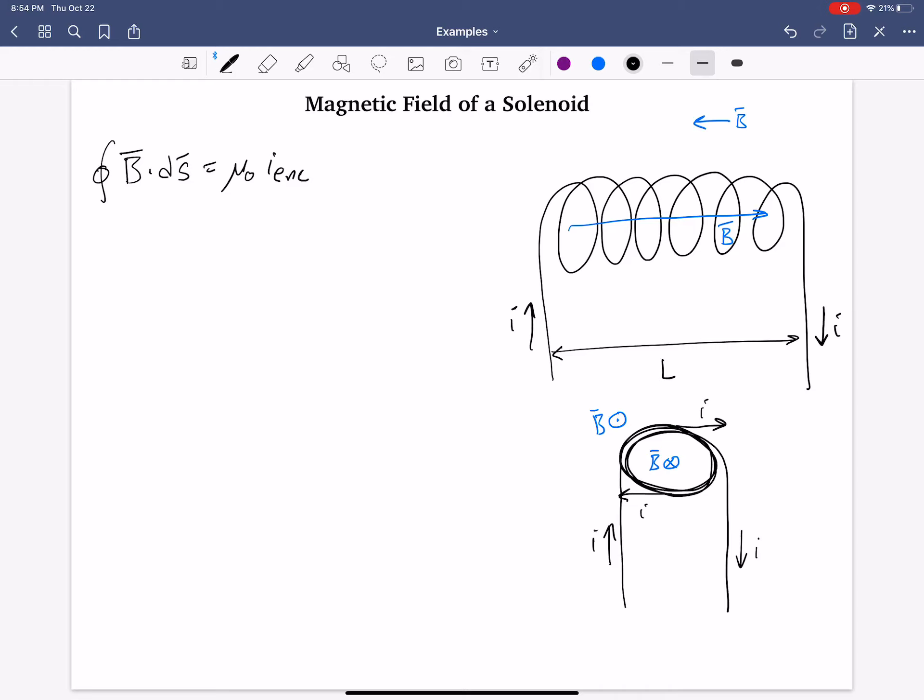Now, what's the best Amperian loop shape to try and enclose current in the wire, right? Specifically, this solenoid part, right? How are we going to draw an Amperian loop? Should it be into the screen like this, right? Behind and then in front? Should it be like that? Well, in that case, yes, current is going through.